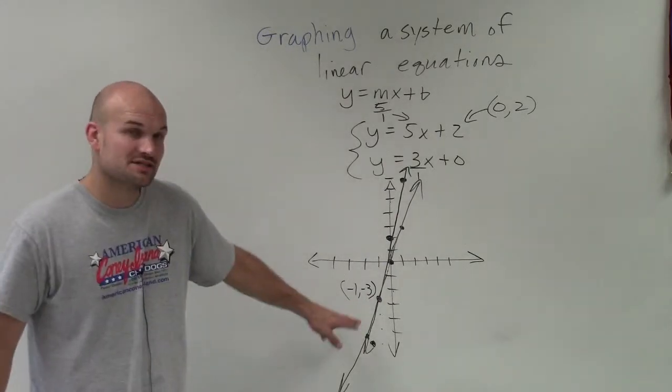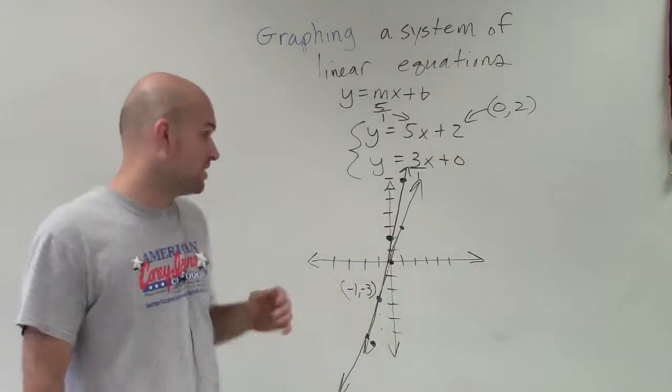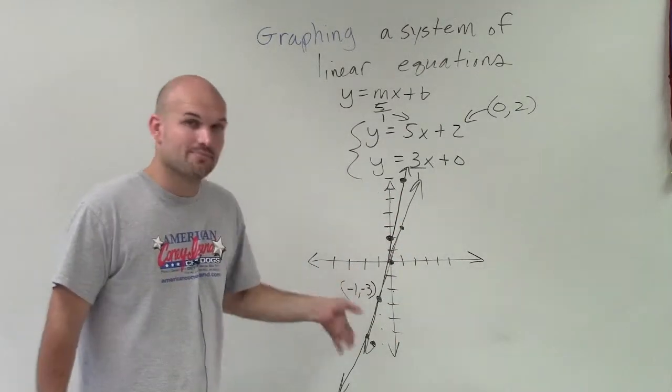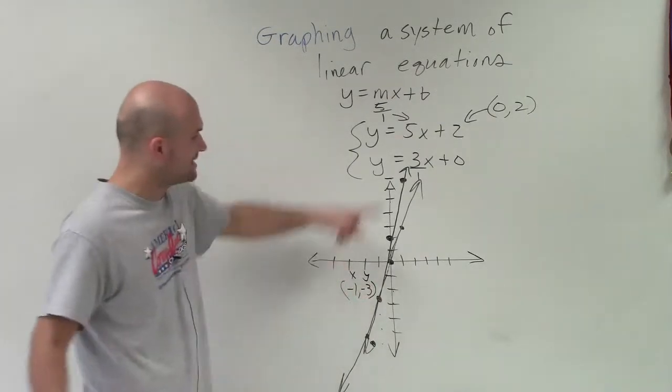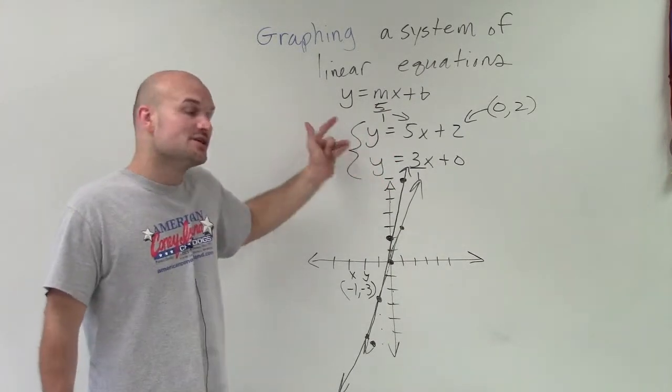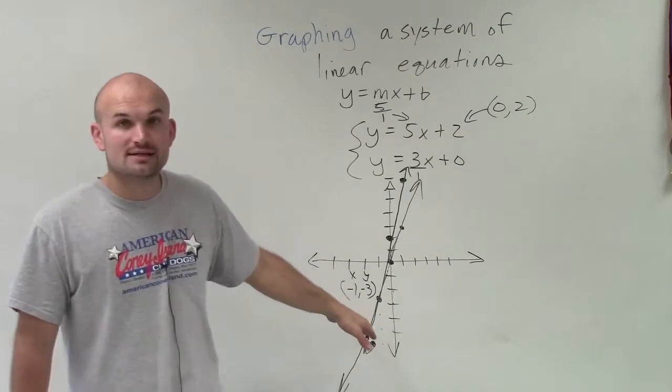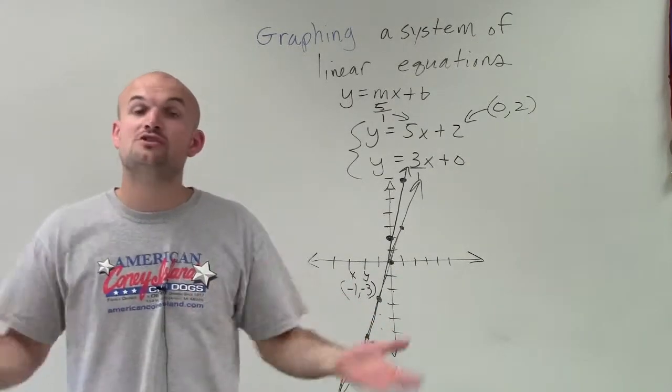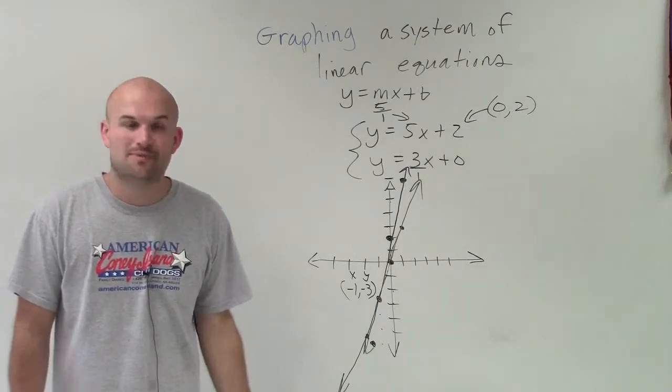So therefore, that's your intersection of these two equations. That's going to be the solution of our linear system, which would be the coordinate point negative 1, negative 3. What that means is, remember, that's x and y. So when x equals negative 1 and y equals negative 3, both of these equations are going to be true. Since we only have one point, we know our solution is consistent, and since there's only one solution, it's going to be independent.